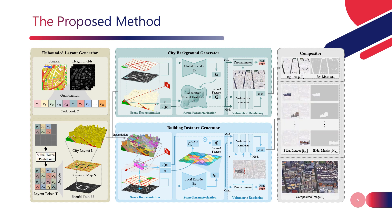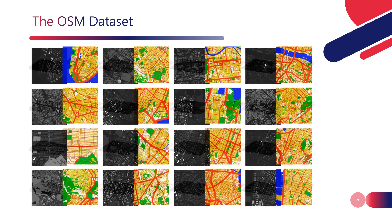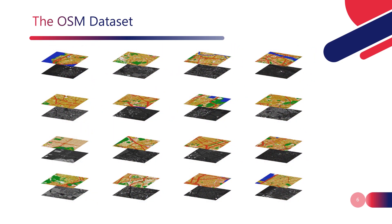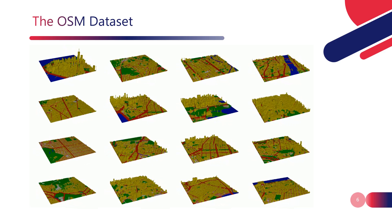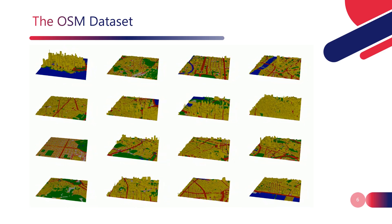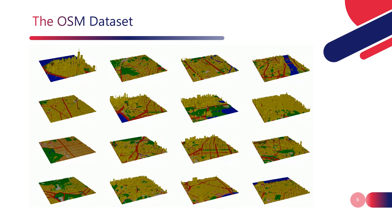Here are some samples of the OSM dataset. The gray images are height fields and the colorful images are semantic maps. The city layouts can be generated by extruding the pixels in the semantic map based on the corresponding values in the height field.